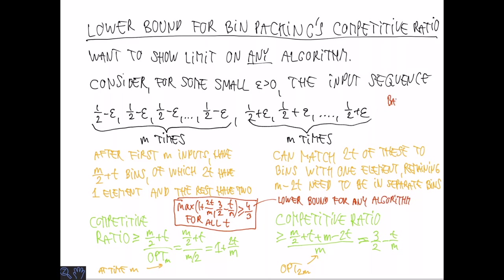This is an active area of research. In 2018, Balogh et al. showed that the competitive ratio of bin packing is between 1.543 and 1.578.